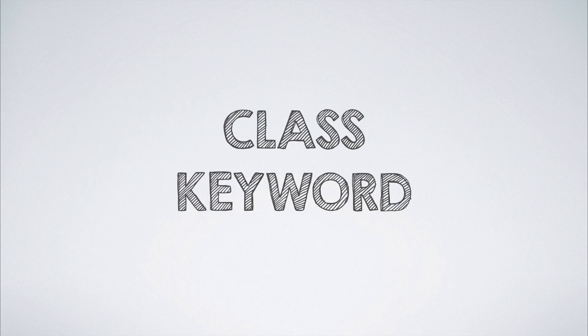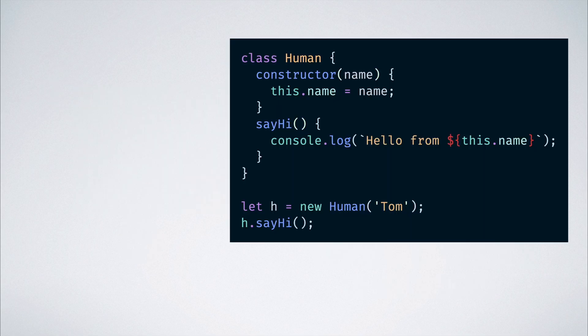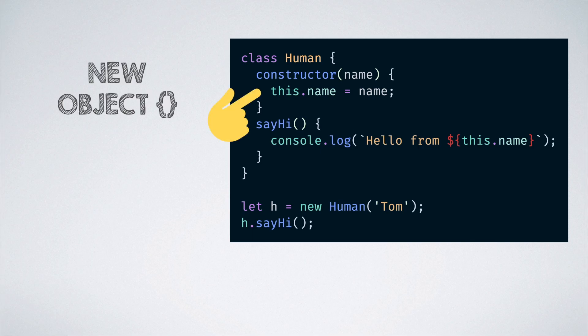The class keyword behaves in a way that is a mix of a few of the cases that we looked at earlier. Inside of the constructor, the this keyword points to the new object on which the non-static properties are added. And inside of the methods of the class, it points to the instance on which the method is invoked.